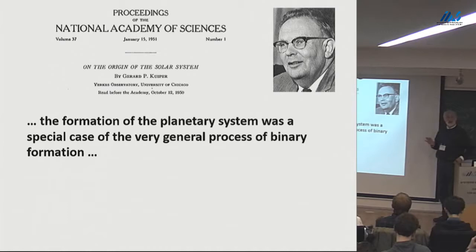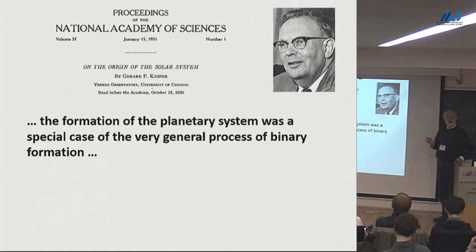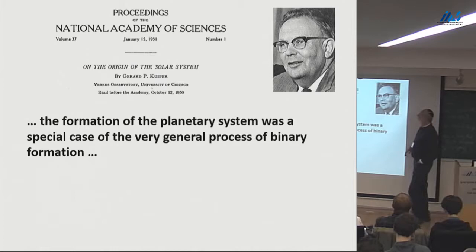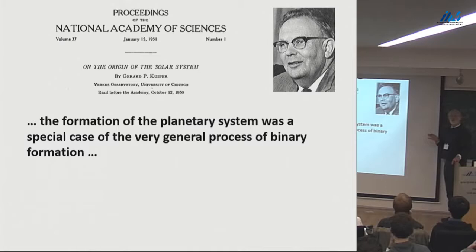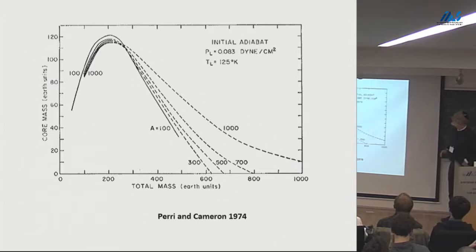This is not the only solution. Maybe you don't build planets like this at all. I found an early paper of Kuiper's, 1951, where he says the formation of the planetary system was a special case of the very general process of binary formation — you make planets like you make stars. That's another alternative that has to be considered. There are reasons why people don't consider it so much, but it's something you should bear in mind. Let me show you the rest of this accretion story.